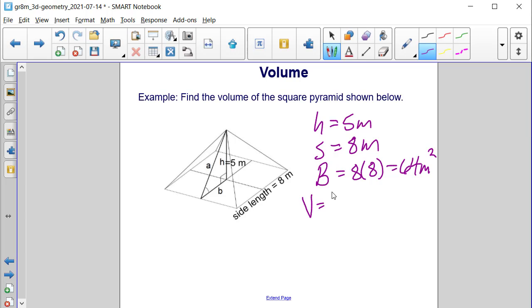The volume formula is one-third times the area of the base times the height. So, we know we have one-third, the base area is 64, and the height is 5. So, we'll have one-third of 320. And when we take a third of 120, we get 106 and two-thirds cubic meters.